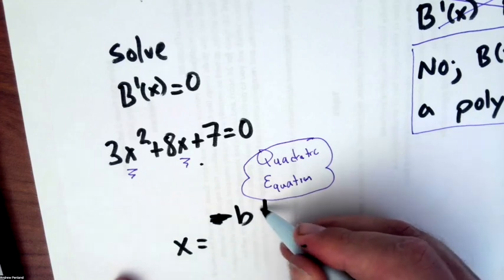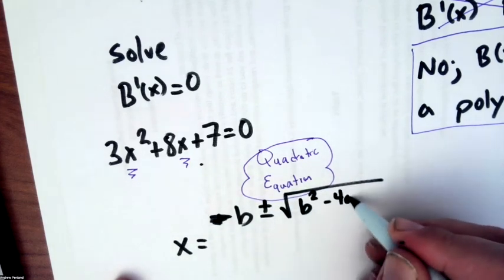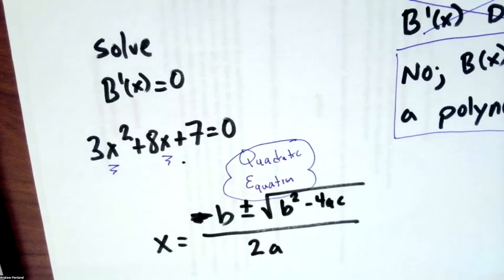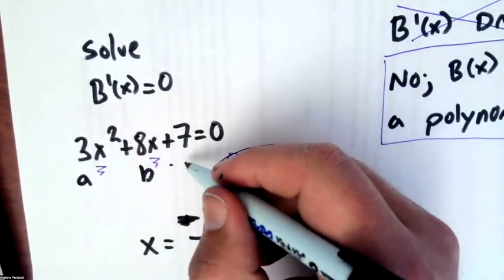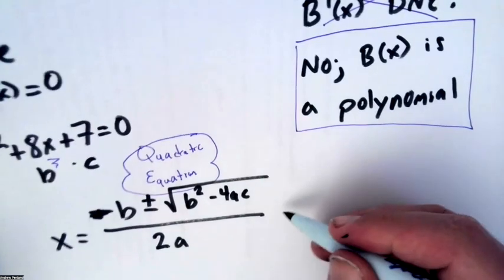Opposite of b, opposite of b, plus or minus square root, plus or minus square root, b squared minus 4ac, b squared minus 4ac, all over 2a, all over 2a. And then I have to identify, okay, my a was 3, b was 8, c was 7.